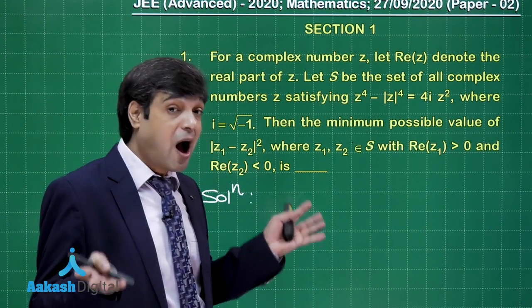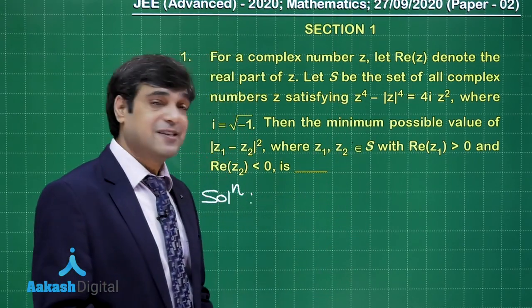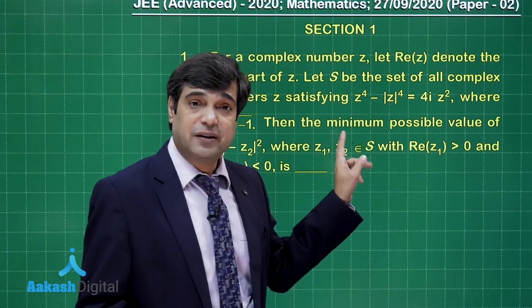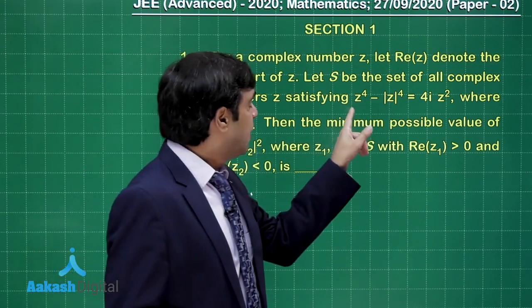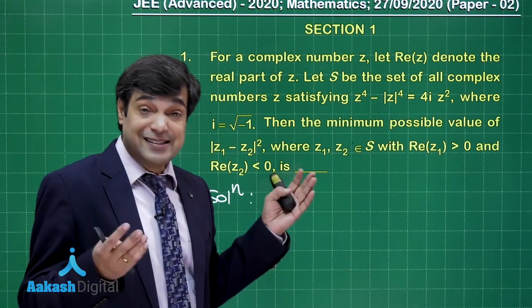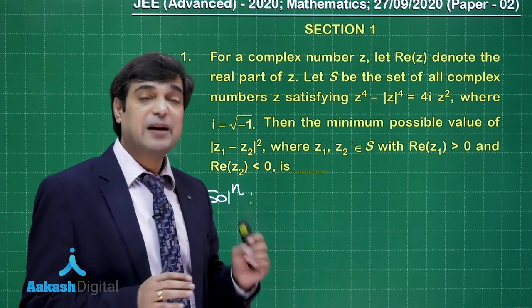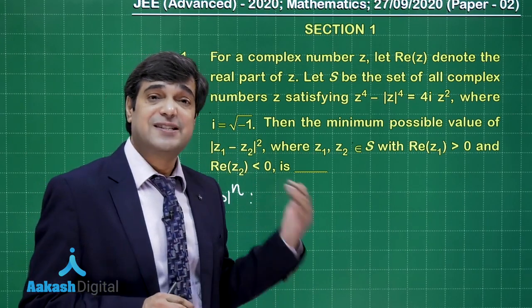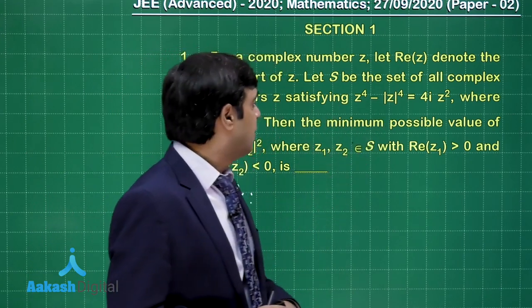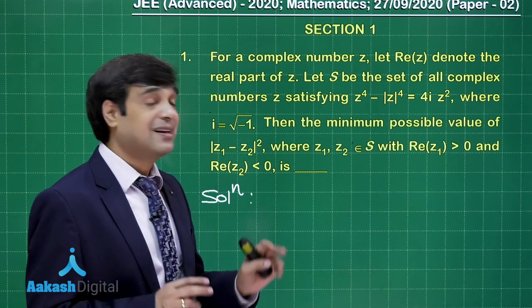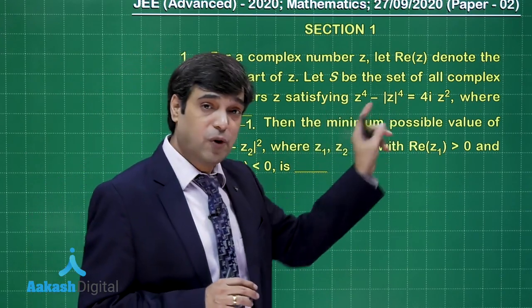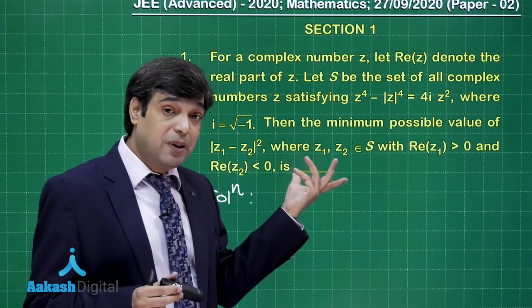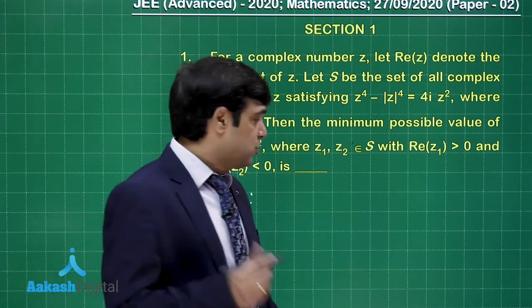There are many options to approach this. If we say z = x + ιy, we get a fourth-degree equation, though some terms will cancel. Another possibility: put z² = x + ιy since z is complex and z² is also complex. Or we can write |z|² as z·z̄, since |z|⁴ = (z·z̄)². This last option directly cancels one z², making it simple in terms of z². Let's go with this approach.